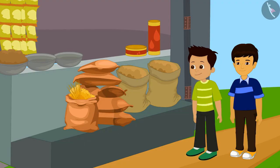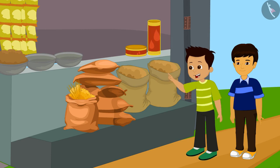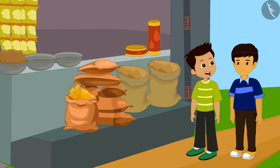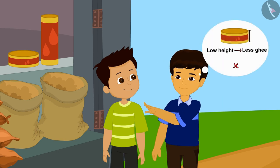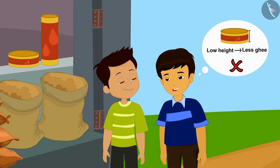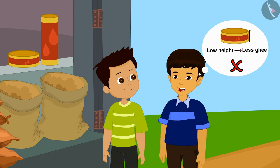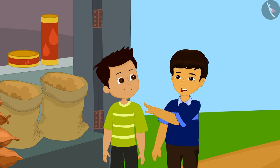Look at how small this box of ghee is, and look how tall this box of ghee is. Surely there will be more ghee in this taller box. No Thomas, it is not necessary that there is less ghee in this shorter box just because it has a lower height and more ghee in the taller box. Let me explain this through mathematics.